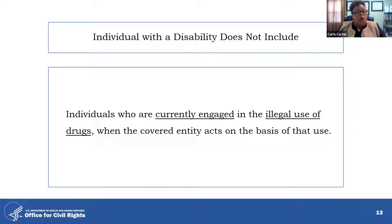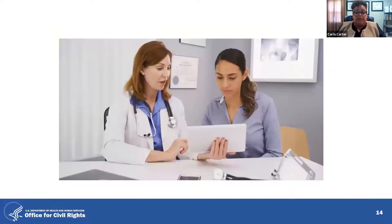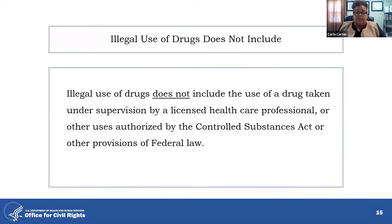What about the use of marijuana in a state where it is legal? Section 504 and the ADA refer to illegal drug use under federal law. The fact that the use of marijuana is legal in some states does not mean that a person is not engaged in the illegal use of drugs under federal law. The illegal use of drugs does not include the use of a drug taken under the supervision of a licensed healthcare professional, or for other uses authorized by the federal Controlled Substances Act or other provisions of law.